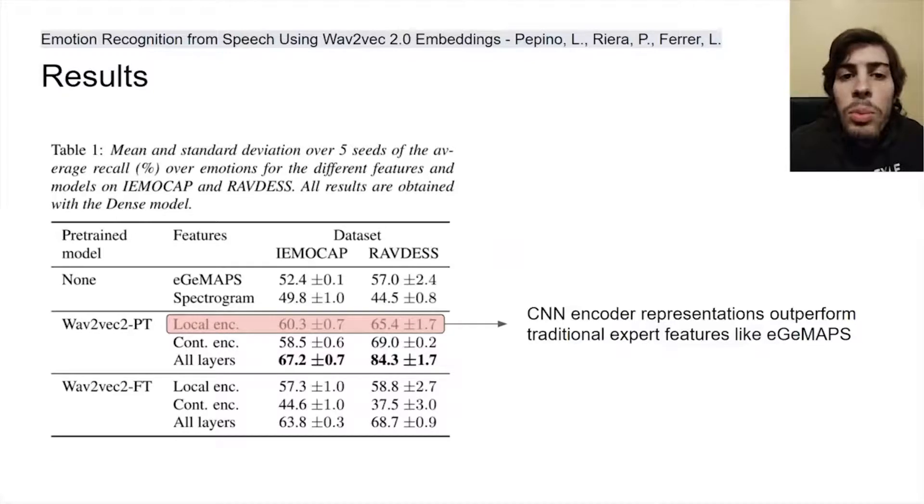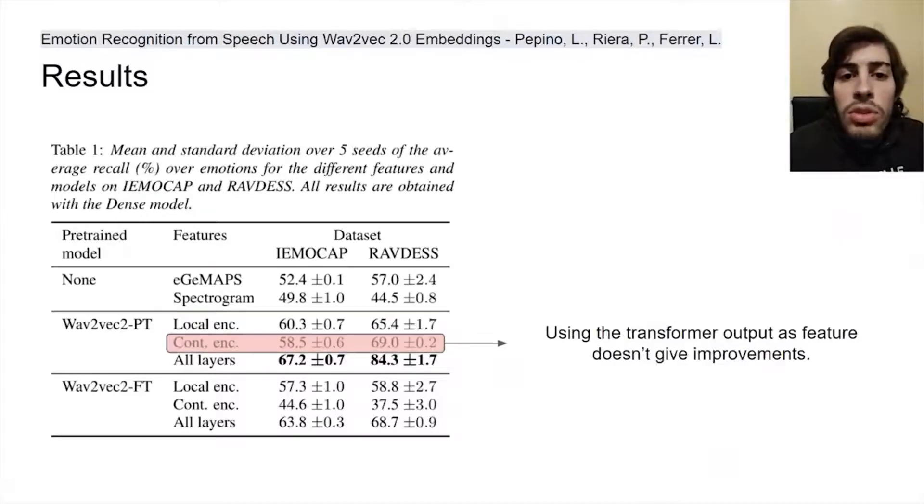are useful features which outperform expert features like eGeMAPS. Using the output of the transformer alone as feature didn't give improvements.